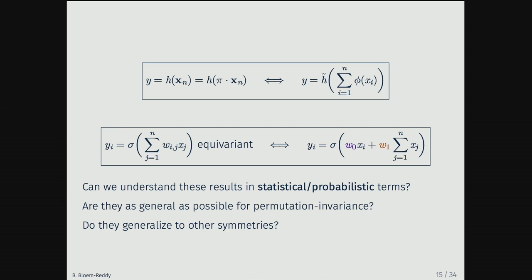We have these two magical results that greatly simplify the problem. The top one is quite general; the bottom one restricts to a specific neural network architecture but reduces the parameter space from n² weights per layer to two. Can we understand these in statistical and probabilistic terms? Are they as general as possible for permutation invariance, and do they generalize to other symmetries? Permutation invariance is not the only thing we might be interested in.